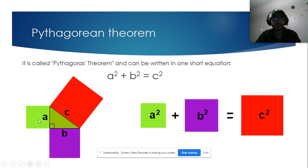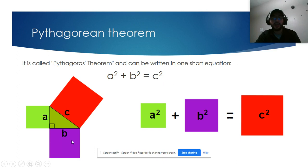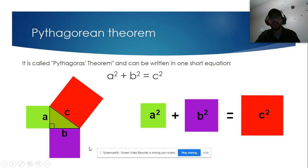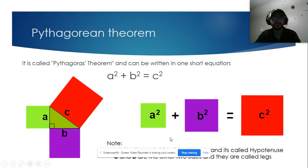The Pythagorean theorem says that the sum of the areas of the two smallest squares must be equal to the area of the bigger one. It's the sum of the areas, not the sum of the lengths.